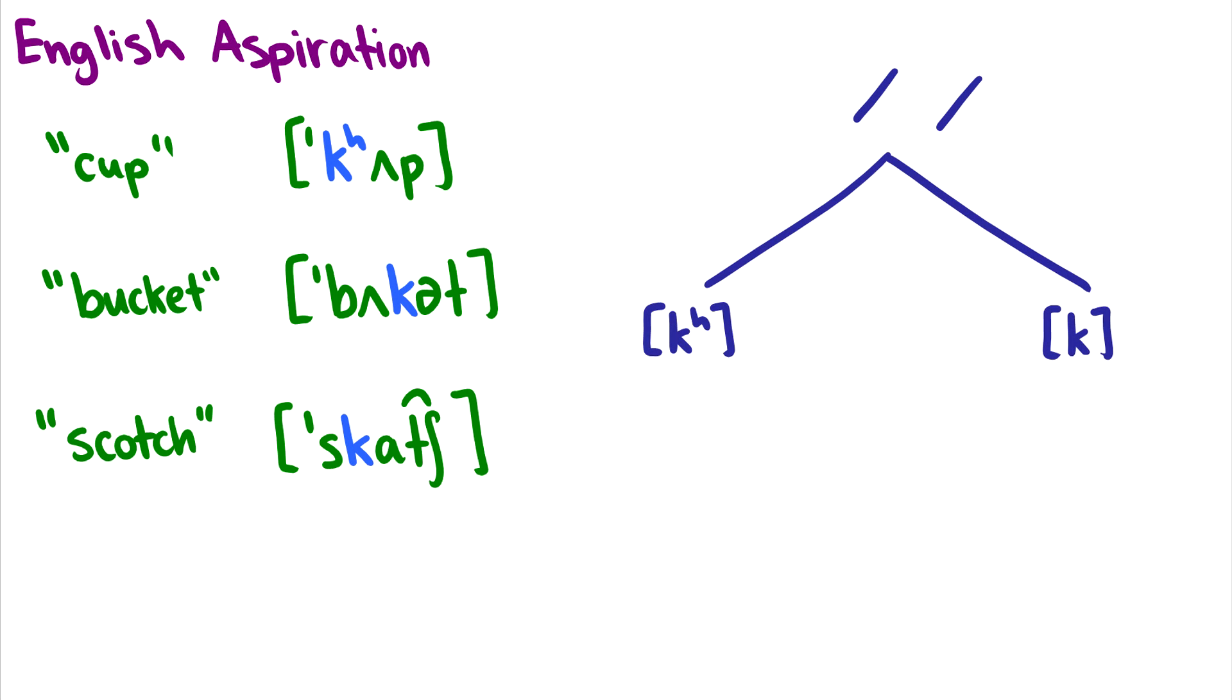So one really important thing that is normally introduced in phonetics, but I'm saving it for now, is English aspiration. And what this means is that in certain spots in words, voiceless stops like p, t, and k have a puff of air in them. So if I say a word like cup, there's a puff of air in that k in the word cup. But if I say a word like bucket, you don't have that puff of air coming in your mouth. Or if you have a word like scotch, there's no puff of air coming out on that k.